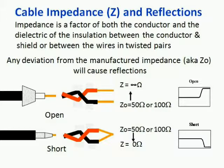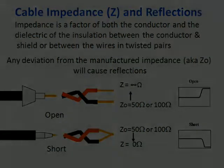In the bottom example, the cables are shorted, and the trace goes down to zero when those reflections are received.